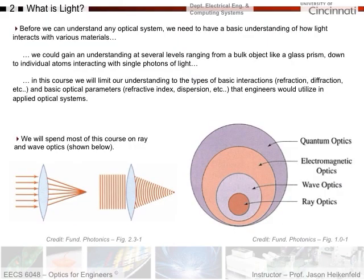Before we can really go too far in this lab, we really have to understand what is light. So let's begin with a basic understanding of light and how it interacts with various materials. To do this, we could gain an understanding at several levels ranging from a bulk object like a prism or go all the way down to individual atoms interacting with single photons of light. I want to take you all the way down to that atomic level at some point, so that when you have a glass prism, you'll be able to visualize why it's bending the light the way it is.